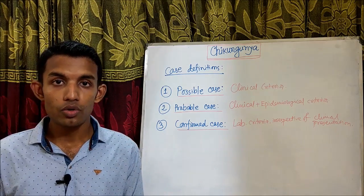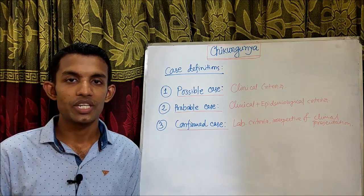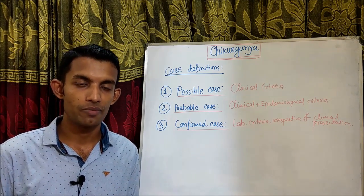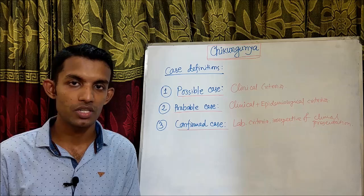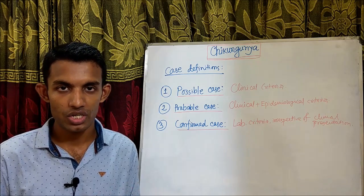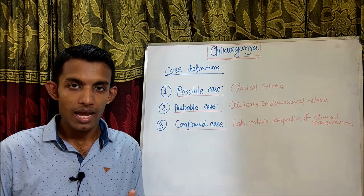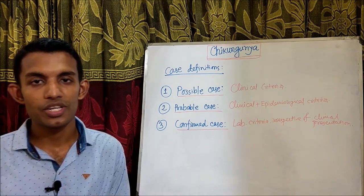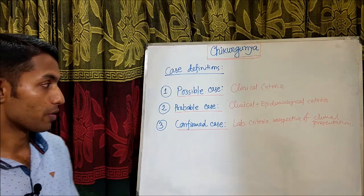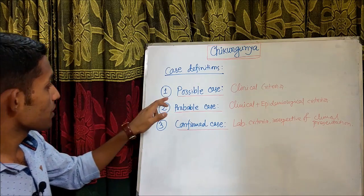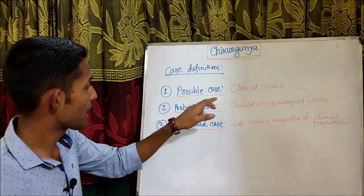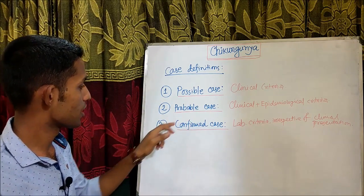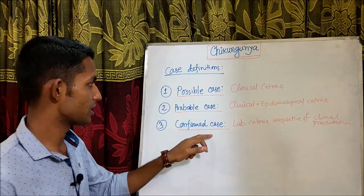Chikungunya should be suspected when a person develops sudden onset of fever, joint manifestations, and rash. Cases can be categorized into three categories: the first is a possible case, the second is a probable case, and the third is a confirmed case.